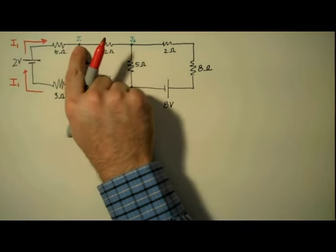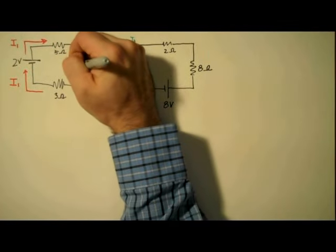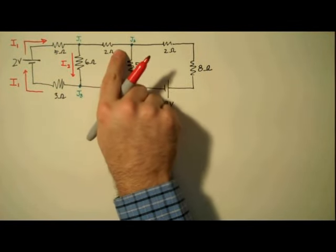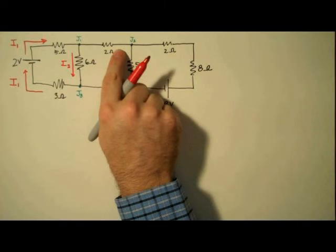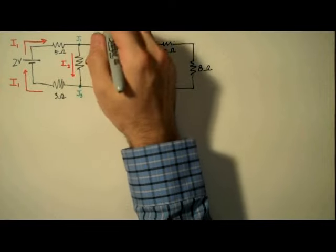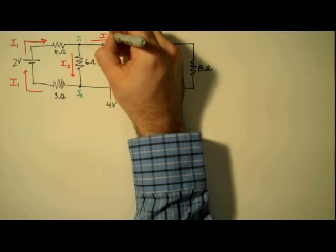Now when I1 reaches Junction 1, it splits into two currents. We'll call this current I2, and normally we'd call this current here I3. Instead, we're going to invoke the junction rule up front and say I1 is equal to I2 plus I3. And if we rearrange this equation, we have I3 is equal to I1 minus I2. And that is how we're going to label this current.